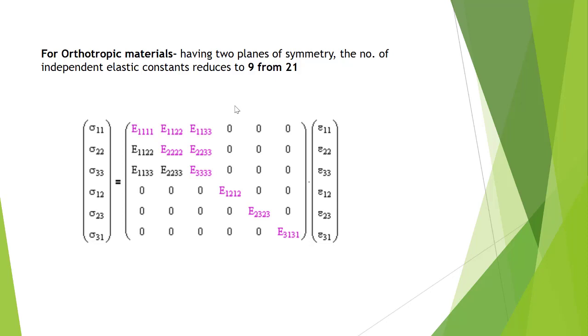If the 6 by 6 matrix is symmetric, then we have 6 times 7 divided by 2, which is the number of independent elements.